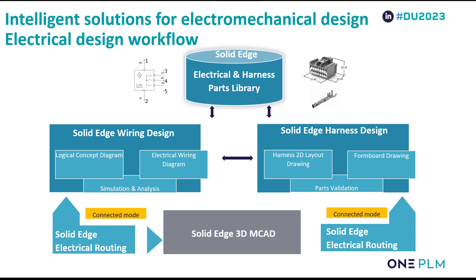To recap what we've seen: we've shown you how to use Wire and Harness Design to quickly create 2D schematics, how to use design rule checks to simulate our design, and how to use the connected mode to link the 2D and 3D environments together. We've also shown you how to create reports in both connected and disconnected modes.